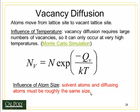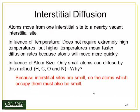The influence of atom size: solvent atoms and diffusing atoms must be roughly the same size, because the diffusing atom has to fit into the vacancy sites left behind when the solvent atom moves off. Interstitial diffusion occurs at lower temperatures because there's no need to create vacancies. But the higher the temperature, the faster the diffusion rate, because atoms can move more quickly. Interstitial site atoms are going to be small, such as hydrogen, carbon, oxygen, and nitrogen.